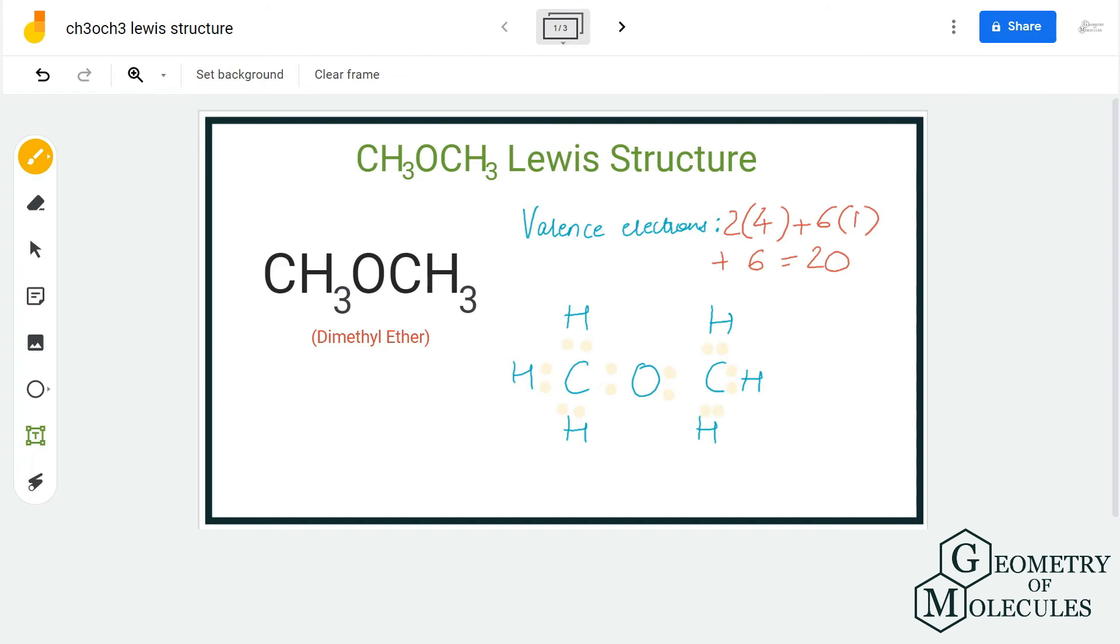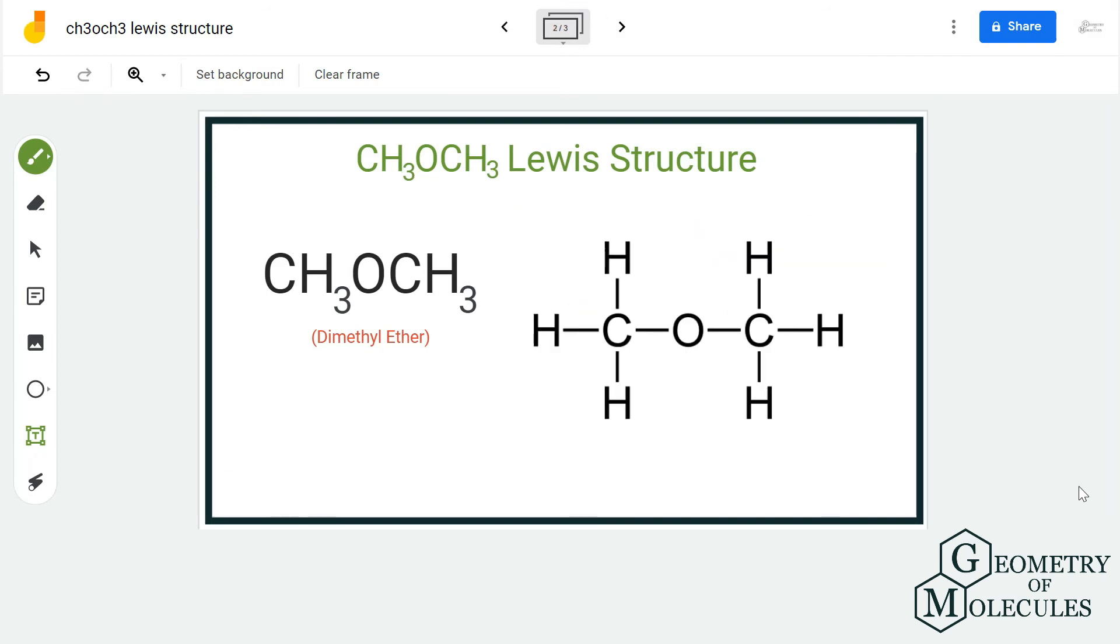Doing that, we have already used up 16 valence electrons out of 20, and we are just left with four more. These four electrons will be placed around the oxygen atom. Doing that, you will see that all the atoms in this molecule have complete octets, with eight valence electrons in each atom. This is the Lewis structure for CH₃OCH₃.